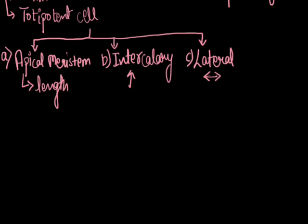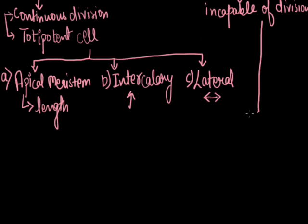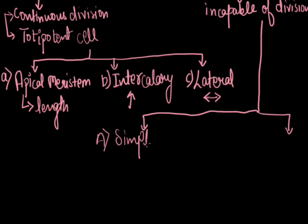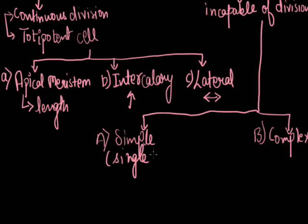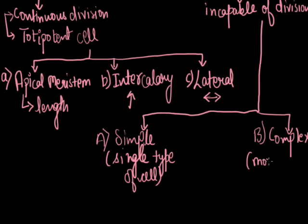Permanent tissues are of two types: simple and complex. Simple tissues are protective or supporting tissues composed of a single type of cell, while complex tissues are composed of more than one type of cell.